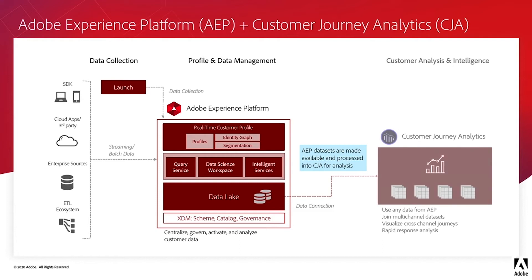Here on the right, CJA integrates with AEP through data connections. When CJA accesses the data lake, it actually pulls a copy of the data set and then optimizes the data to its own customization pattern. CJA uses a columnar format, which stores the data in columns instead of rows. This allows for very fast access, filtration, and queries.